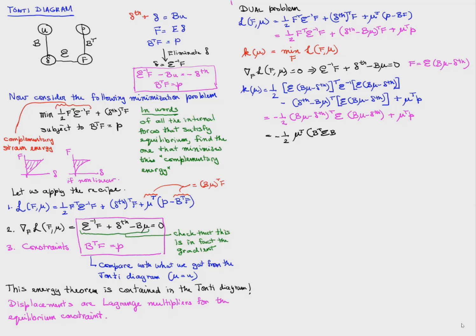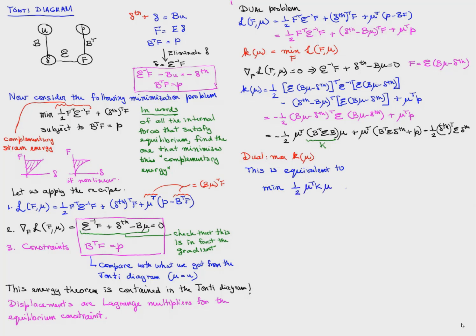In the last step, we get minus one-half mu transpose B transpose E B times mu, plus mu transpose B transpose E delta thermal, plus P, minus one-half delta thermal transpose E delta thermal. We immediately recognize B transpose E B as the stiffness matrix K. So the dual problem is to maximize this K of mu. We can also ignore the term one-half delta thermal transpose E delta thermal because it is just a constant relative to mu.